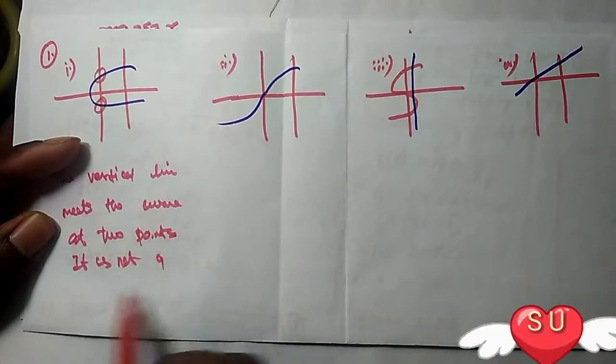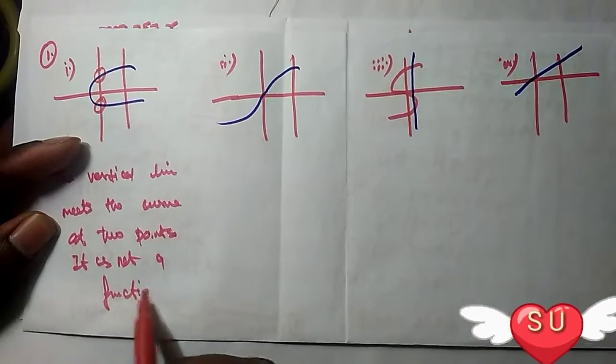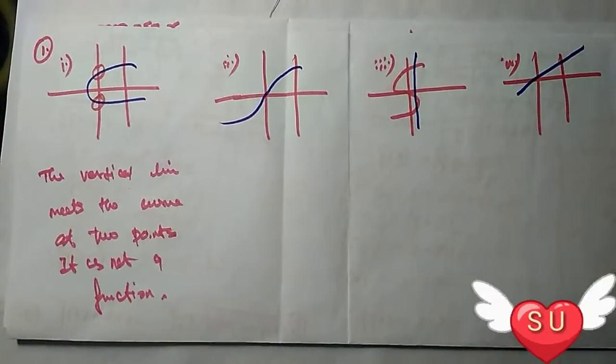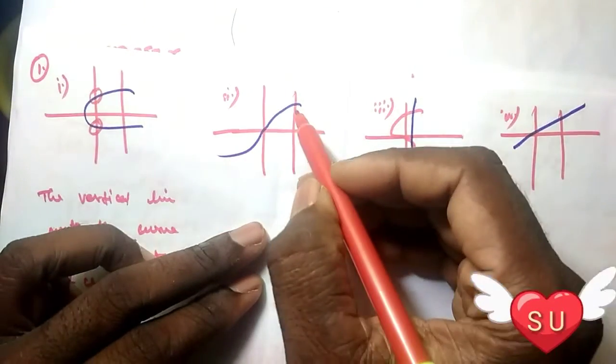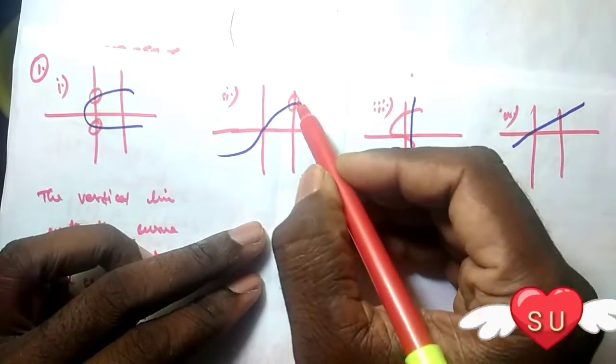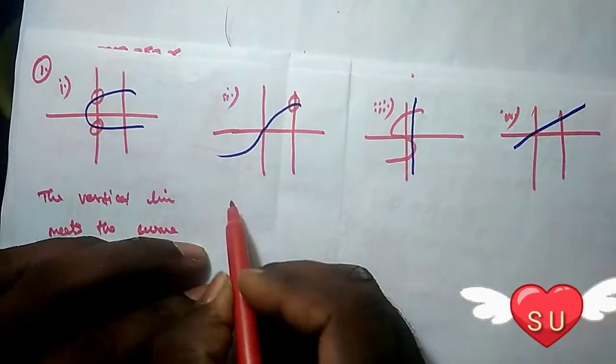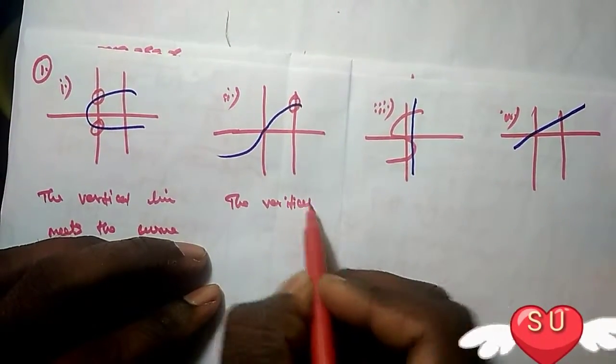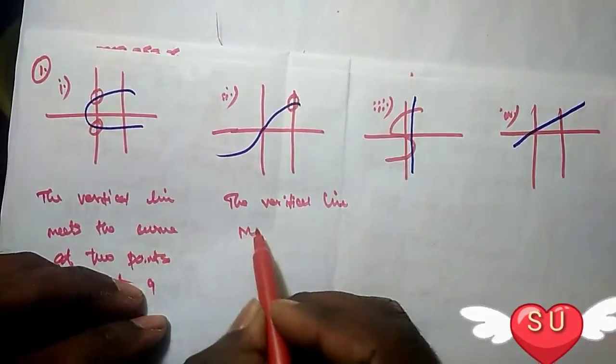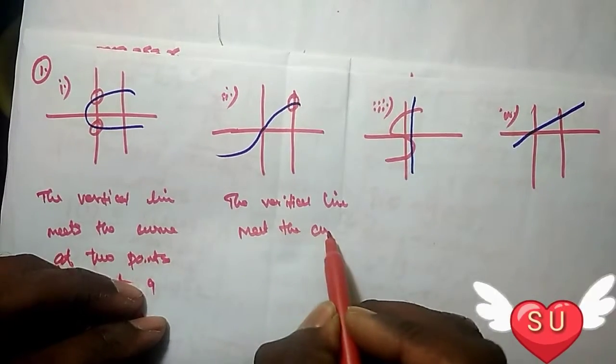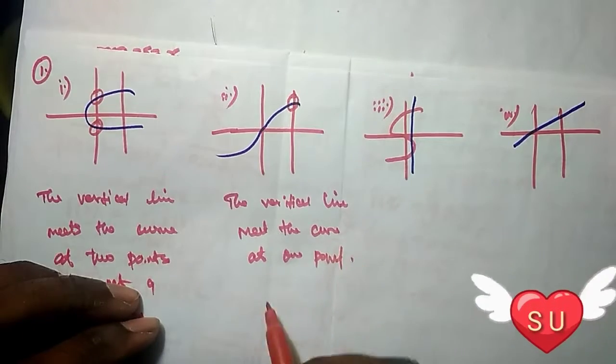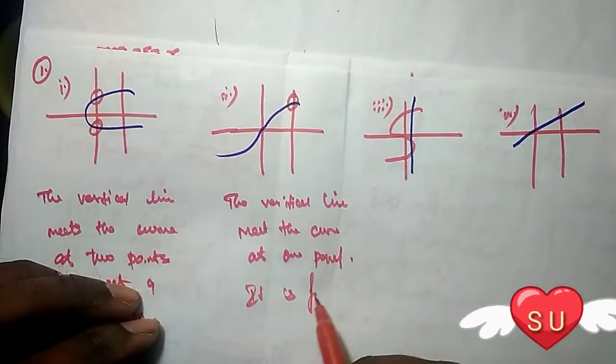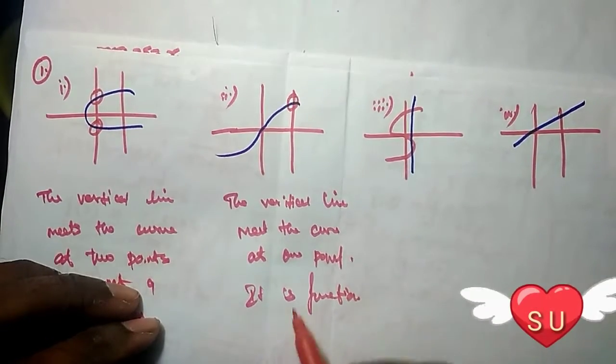Next part, number (iii): the vertical line meets the curve at one point. So when the line meets at one point, it is a function. Yes, it is a function.